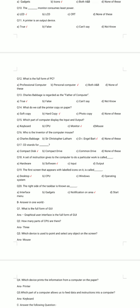Question number 15. Which part of the computer displays the input and output? A. Keyboard. B. CPU. C. Monitor. D. Mouse. The correct answer is option C: Monitor.